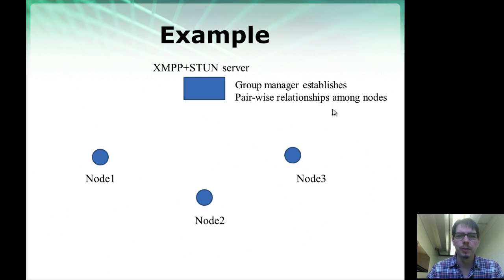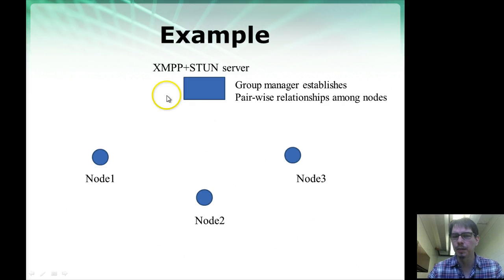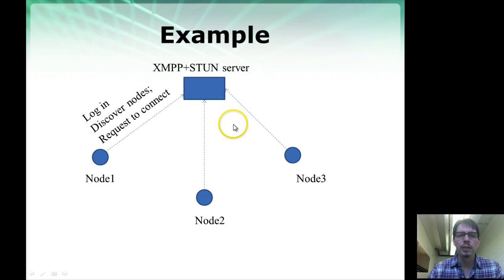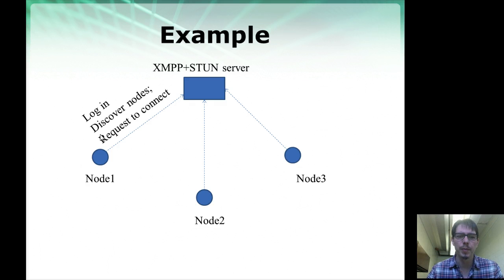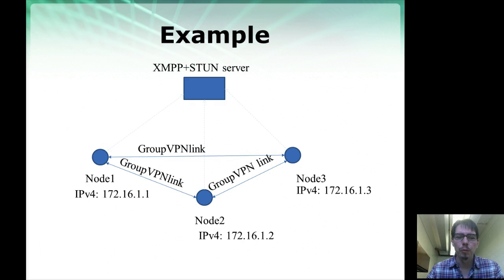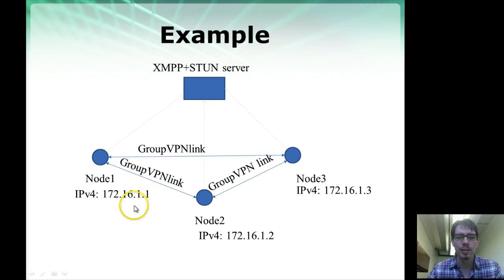Going back to an example similar to what we had for SocialVPN, but now we have nodes that have been established within a group, and that could be by a Group Manager that might be the administrator of this XMPP server. So this Group Manager will say nodes one, two, and three are in the same group, and it will establish pairwise relationships between them. When these nodes log in, they will send presence messages, and other nodes will discover that they are online by receiving these presence messages. When links are created, in contrast with SocialVPN where every node has its own view of every other node's IP address, here they're all in the same subnet, and every node has a distinct IP address on that subnet, and IP addresses are not translated.